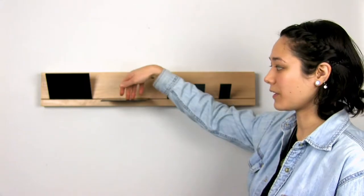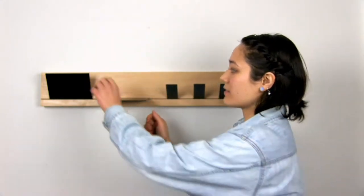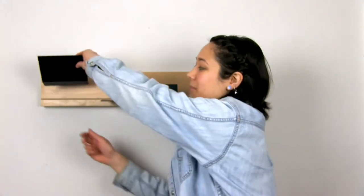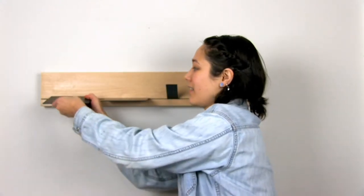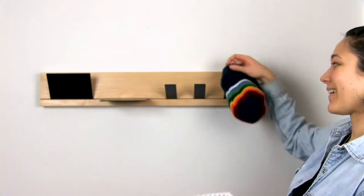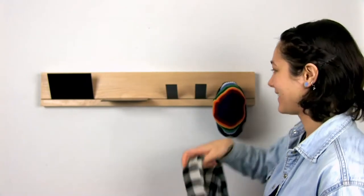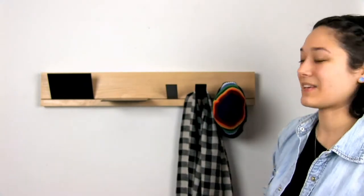This one can either function as a mail holder, and the same piece, if you flip it around, can be a shelf. You can hang things like hats and scarves on the hooks, put things like your phone, keys, and wallet on the shelf.